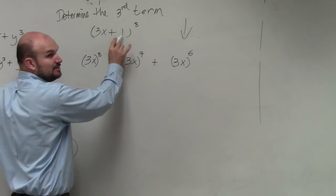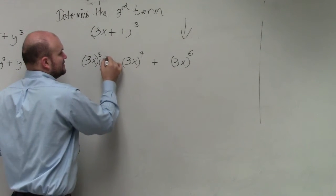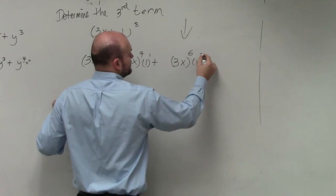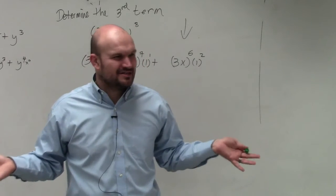Then we take our second term, and that goes in ascending order. So it's 1 to the 0, 1 to the first, and then 1 to the second. But again, 1, we don't really care about 1. I mean, 1's not changing our problem, right?